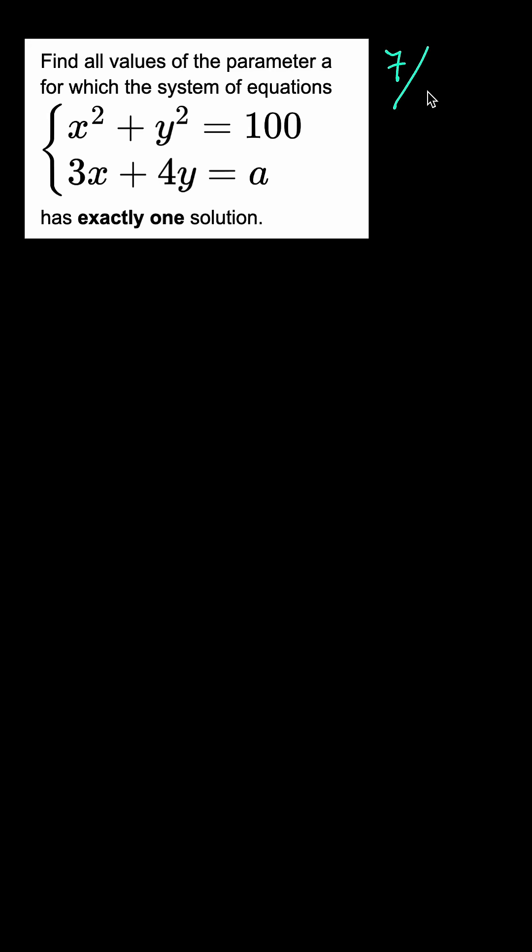This is the seventh of the nine solutions to this parameter-based problem, and this one is easily the wildest. We need to find all values of the parameter a for which this system of equations has a unique solution, and this time we're going to use the idea of symmetry.